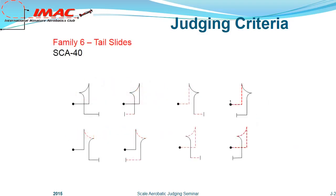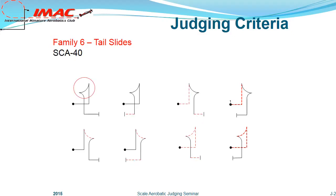Here are examples of several types of Tail Slides with both upright and inverted entry lines. The exit lines can also be either upright or inverted. There are two categories of Tail Slides: Wheels Down and Wheels Up. On Rusty Drawings, Wheels Down figures are designated by a solid line and Wheels Up are denoted by a dashed line. The top row of figures are all wheels down while the bottom row are all wheels up.